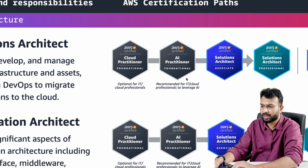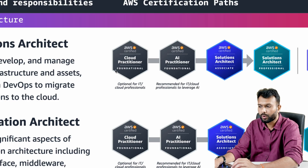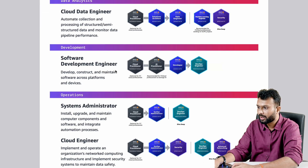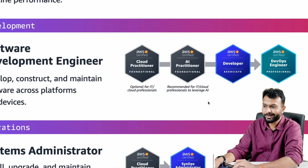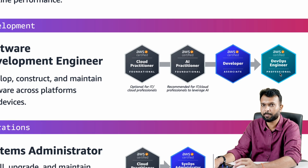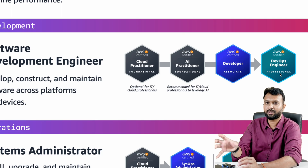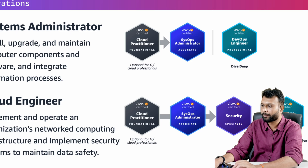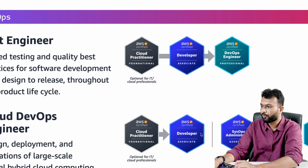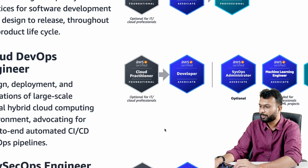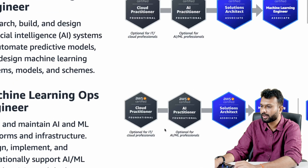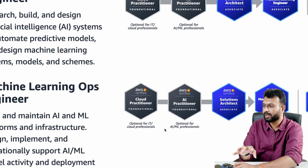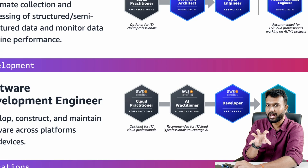Some certifications are optional and some are recommended. You can start your journey from AI Practitioner or Cloud Practitioner. For software development, after Cloud or AI Practitioner, you go to Developer Associate and then DevOps Engineer Professional, since developers handle deployment. For a test engineer specifically, the recommended hierarchy is Developer Associate followed by DevOps Engineer Professional.